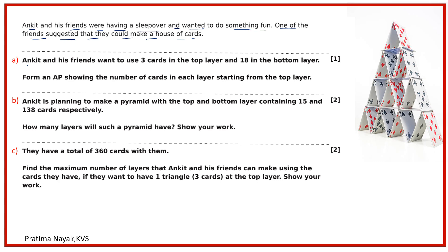Question one: Ankit and his friends want to use three cards in the top layer and 18 in the bottom layer. Form an AP showing the number of cards in each layer starting from the top. Question two: Ankit is planning to make a pyramid with the top and bottom layers containing 15 and 138 cards respectively — how many layers will such a pyramid have? Last part: they have a total of 360 cards. Find the maximum number of layers if they want one triangle, three cards, at the top layer.